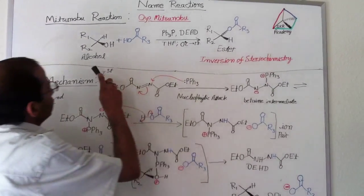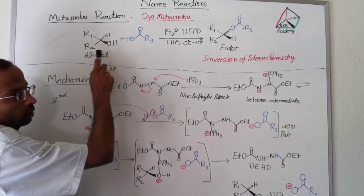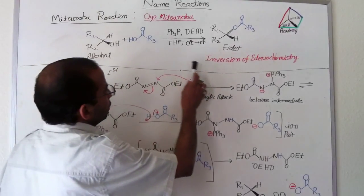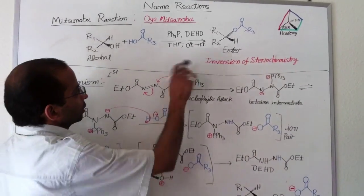The important thing is, in case of alcohol, if it has chiral center, then in this reaction, inversion of stereochemistry takes place 100%.